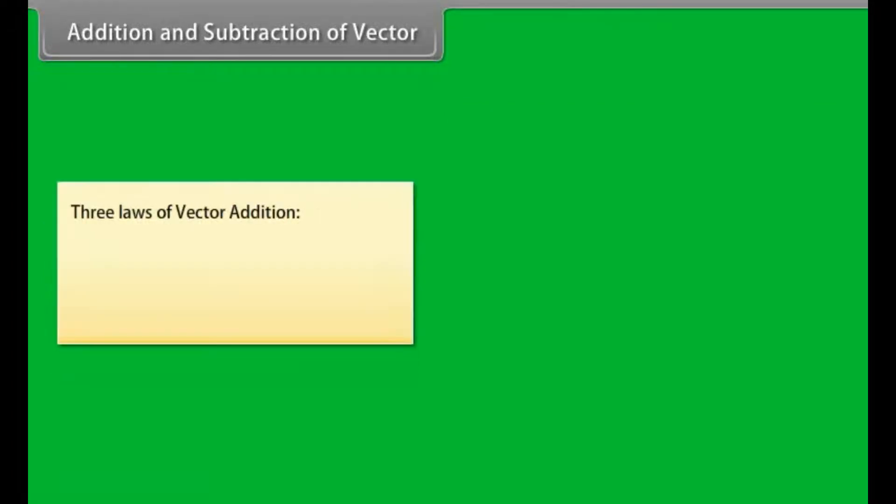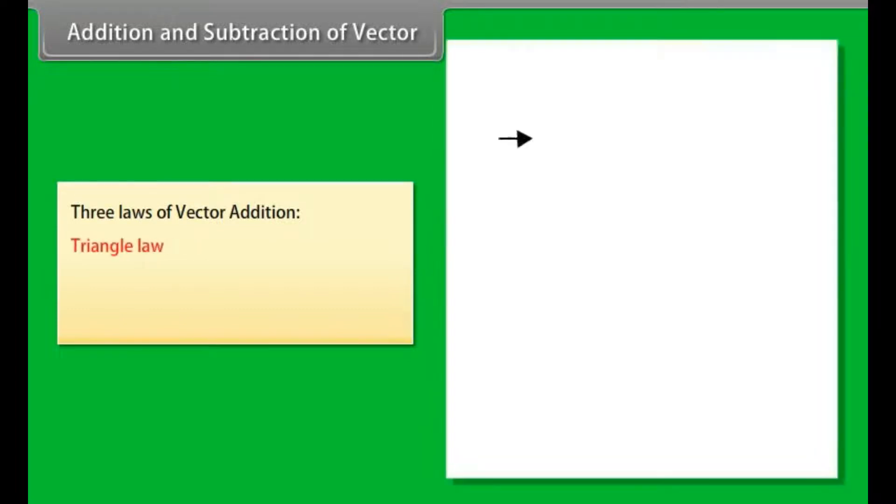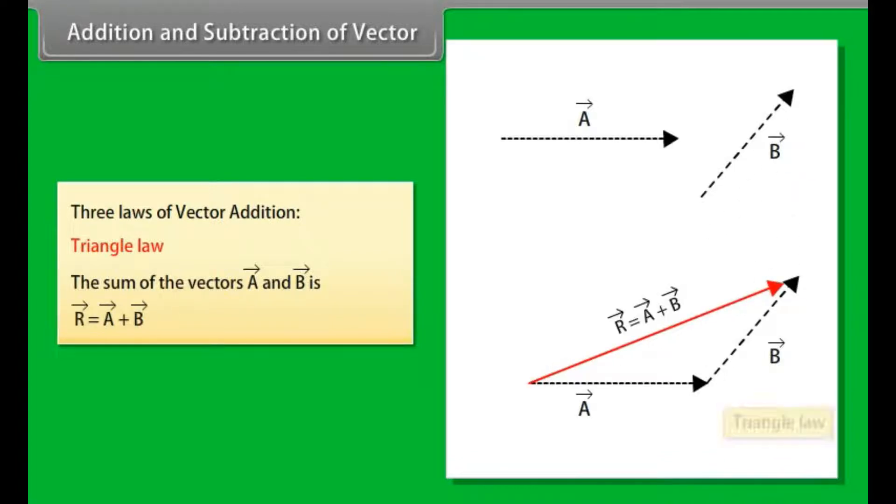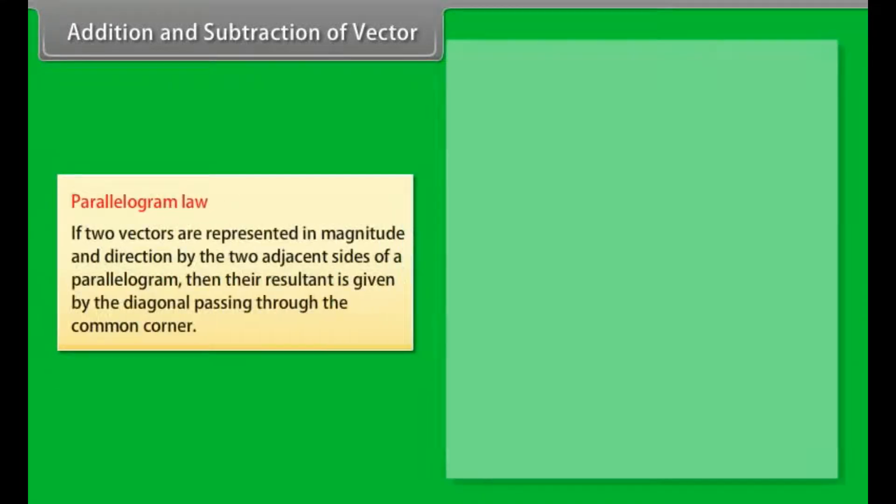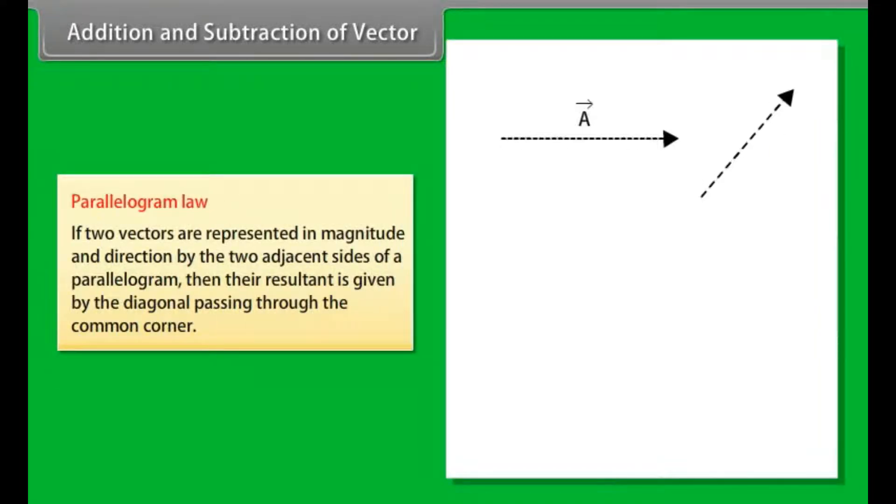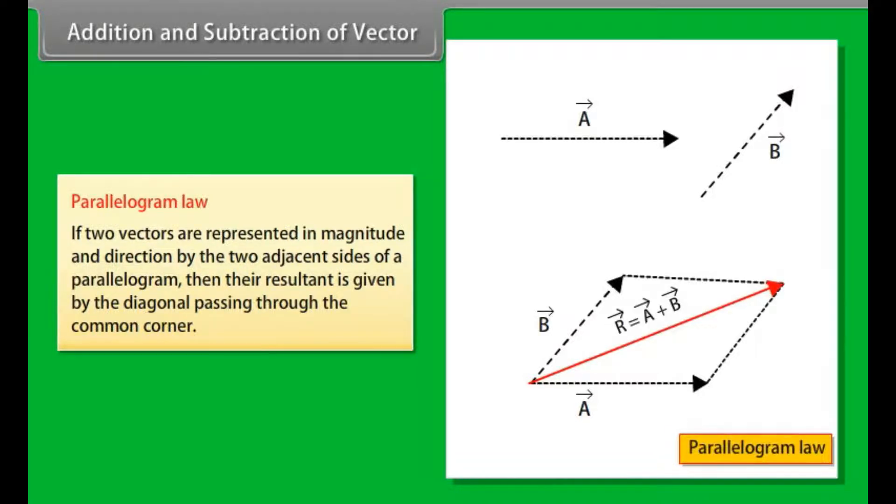Addition and subtraction of vector. Vector addition is done with the help of three laws. A. Triangle law: The sum of vector a and vector b is R vector = A vector + B vector. B. Parallelogram: If two vectors are represented in magnitude and direction by two adjacent sides of a parallelogram, then their resultant is given by the diagonal passing through the common corner.